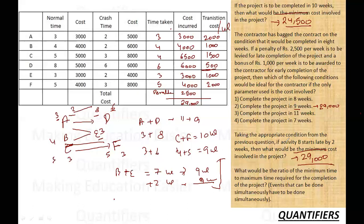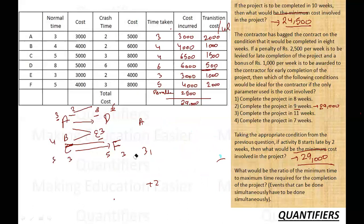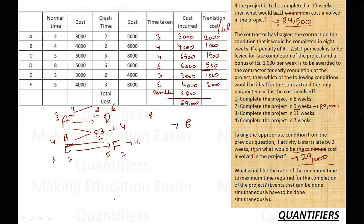Question 4: What is the ratio of minimum time to maximum time for completion of the project? For minimum time, use crash times: A = 2, D = 6, so A+D path = 8 weeks. C+F = 3+3 = 6 weeks, and B+E = 2+2 = 4 weeks. The bottleneck is A+D at 8 weeks, so minimum time is 8 weeks. For maximum time, use normal times: A = 3, D = 8, so A+D = 11 weeks — the critical path. Maximum time is 11 weeks. The ratio of minimum to maximum time is 8:11.